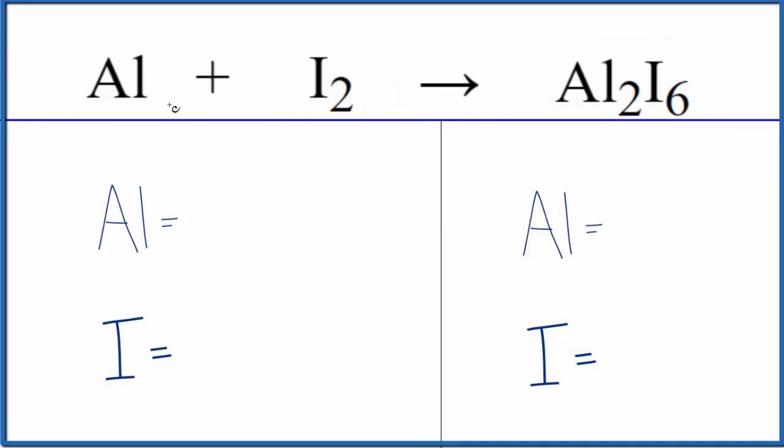To balance the equation, let's count the atoms up. We have one aluminum and two iodine, and in the products, two aluminum and six iodine.